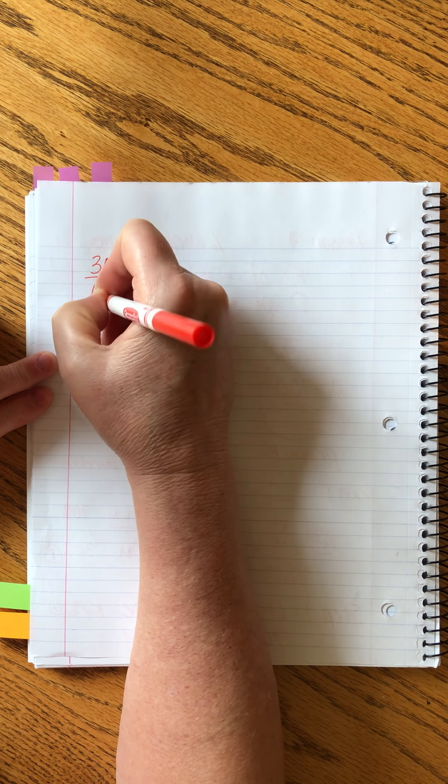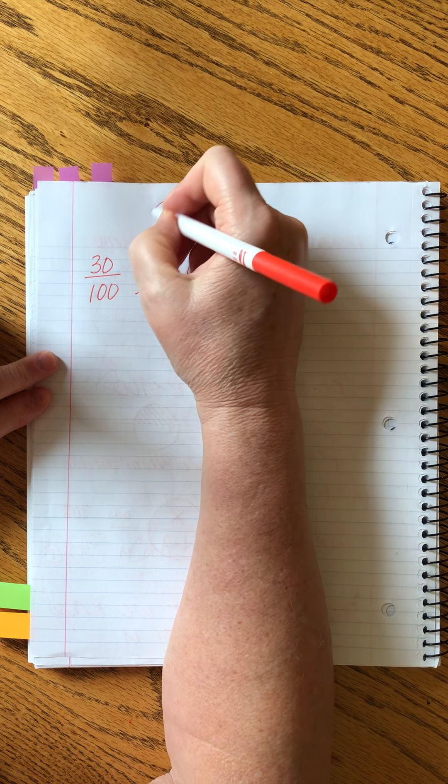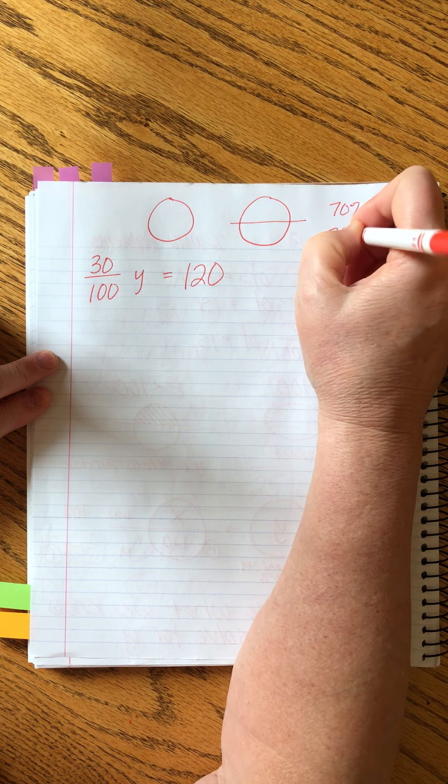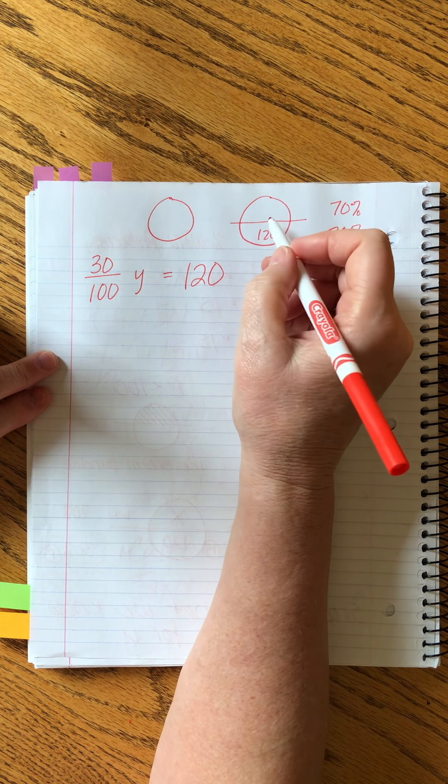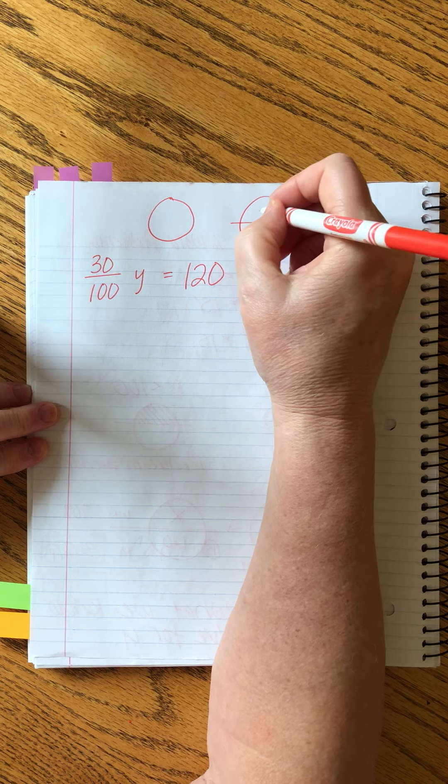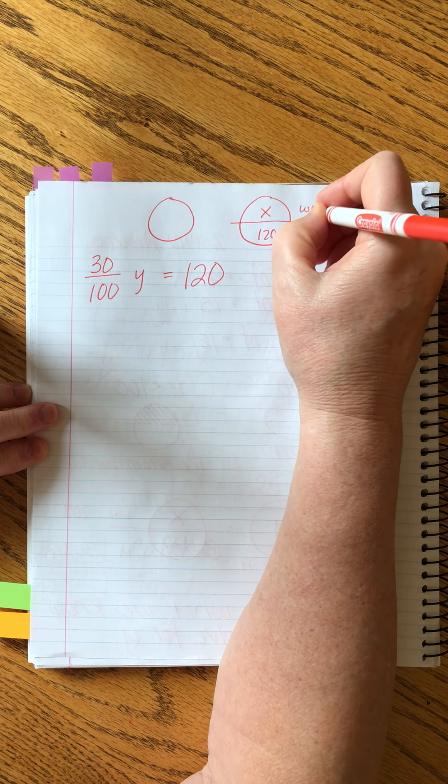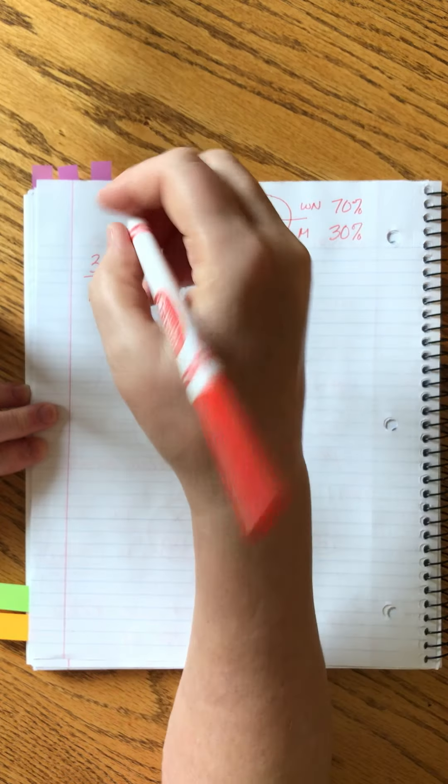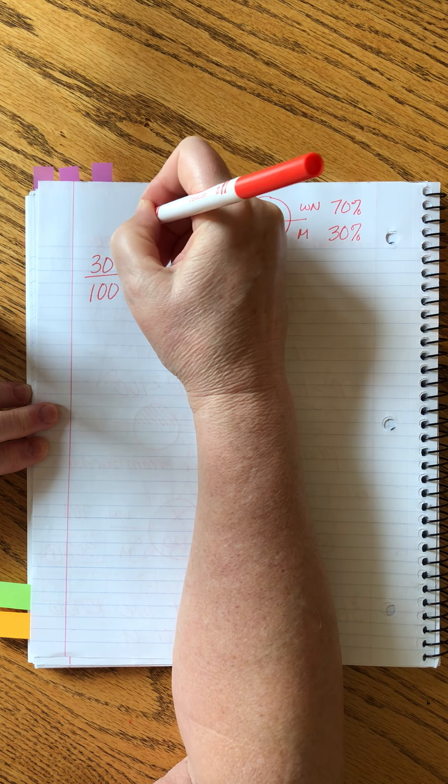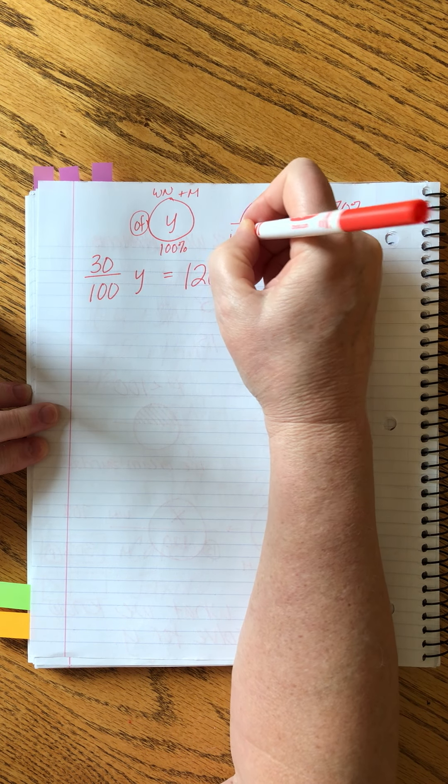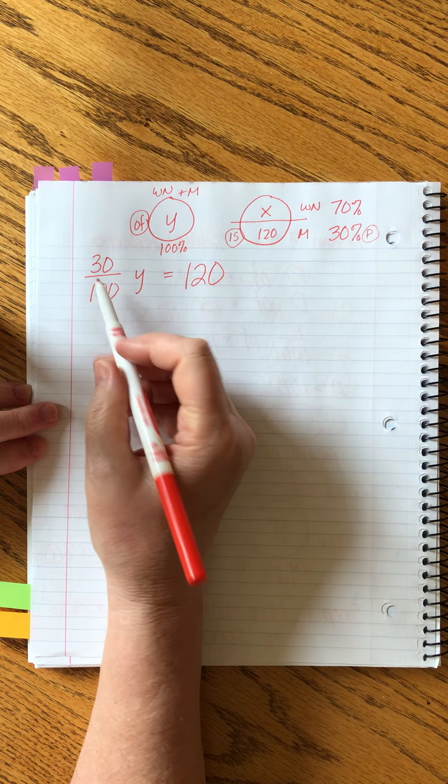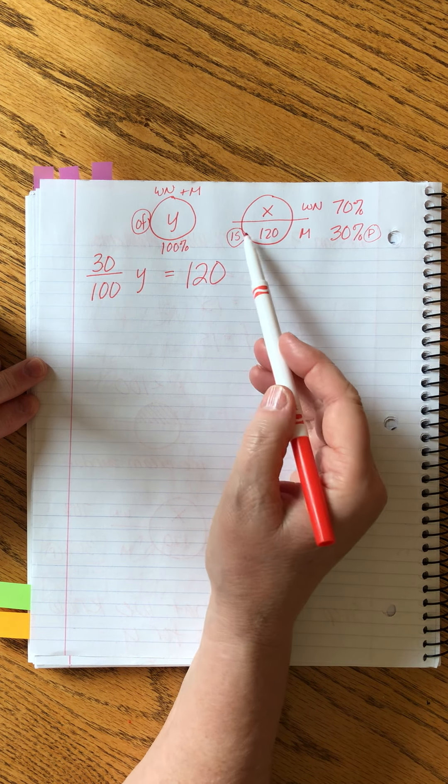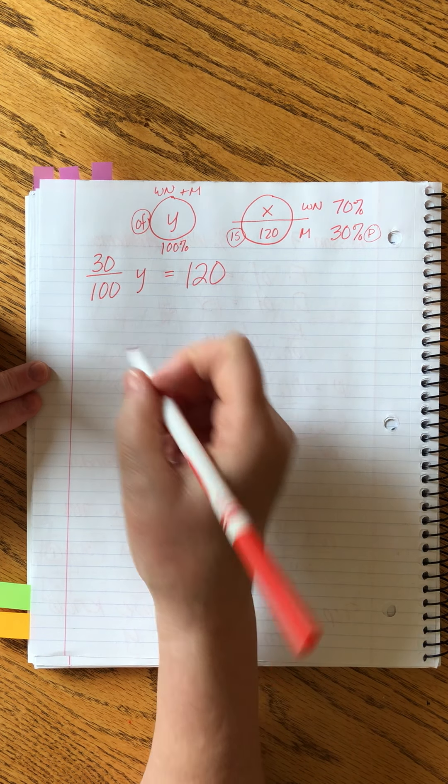So we're going to set it up as 30 over 100 times y equals 120. And I'm just going to quickly redraw our picture up here. 70 percent, 30 percent. Notice that I don't really worry about putting my line like it doesn't represent exactly 70 percent and 30 percent. I'm just kind of dividing it and not worrying about it. These are our wood nymphs. These are our maids. This is everybody. We're calling this y. Percent over 100 times y equals 120. So I'm using the fact that we know both of these in order to create this number. Now, all we have to do is solve this equation. And this is step one.